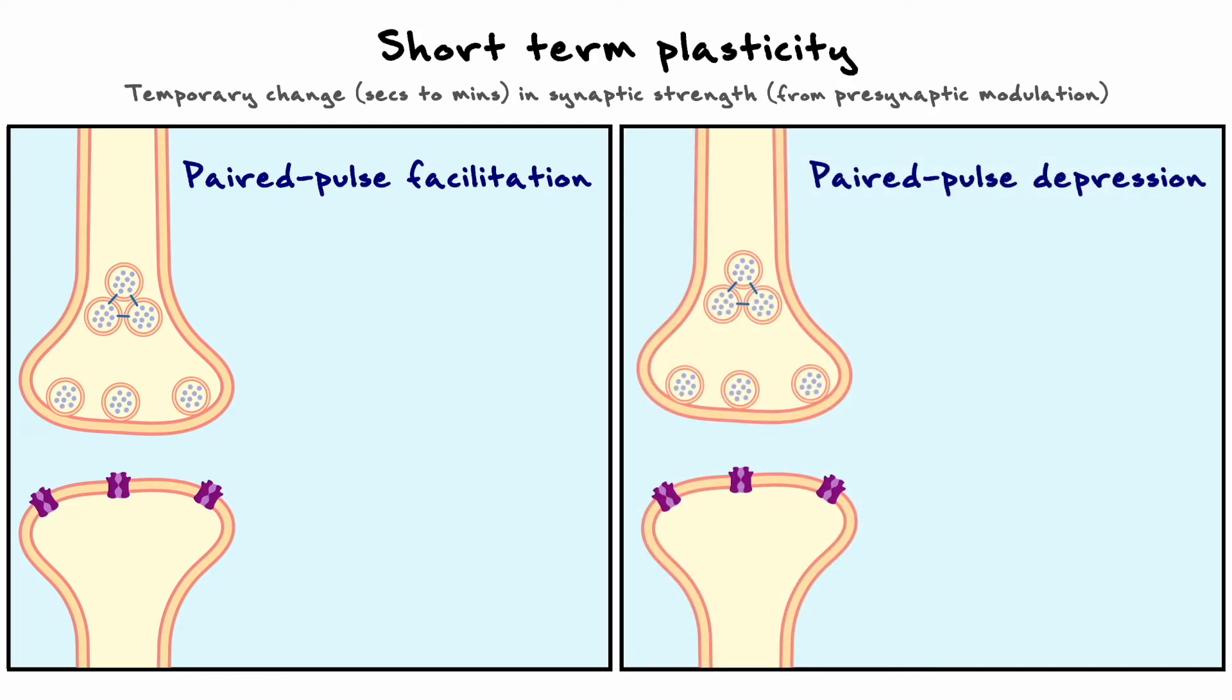To see how plasticity occurs, we always need to consider a baseline response, so pre-plasticity and post-plasticity response. For that reason, we will need at least two consecutive pulses delivered to the presynaptic terminal to be able to see any changes in the synaptic strength. Alright, let's begin with paired pulse facilitation.